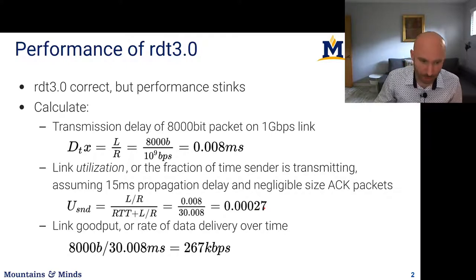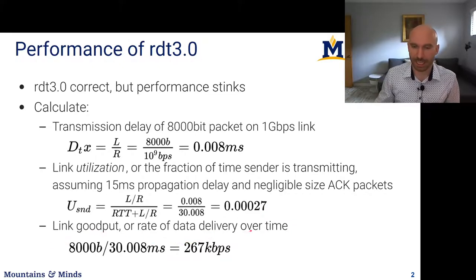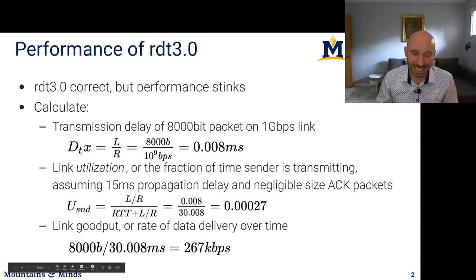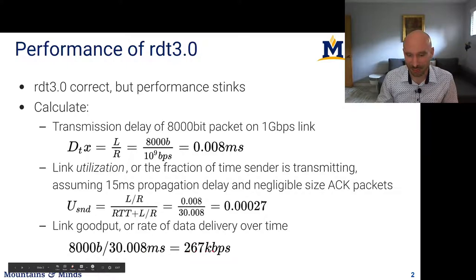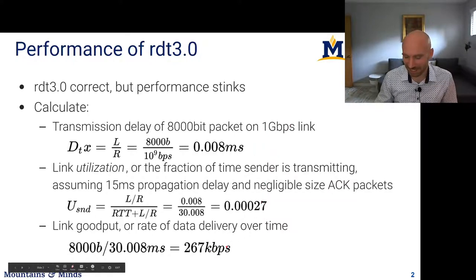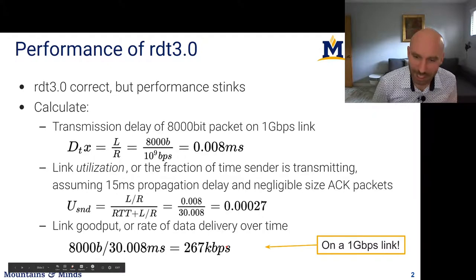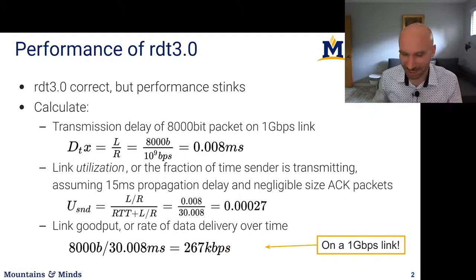The link goodput — the amount of data delivered over time — is 8,000 bits delivered every ~30 milliseconds, giving us effectively 267 kilobits per second. When you consider we're using a 1 gigabit per second link, that's decidedly puny. So what can we do to actually get better utilization and higher throughput?